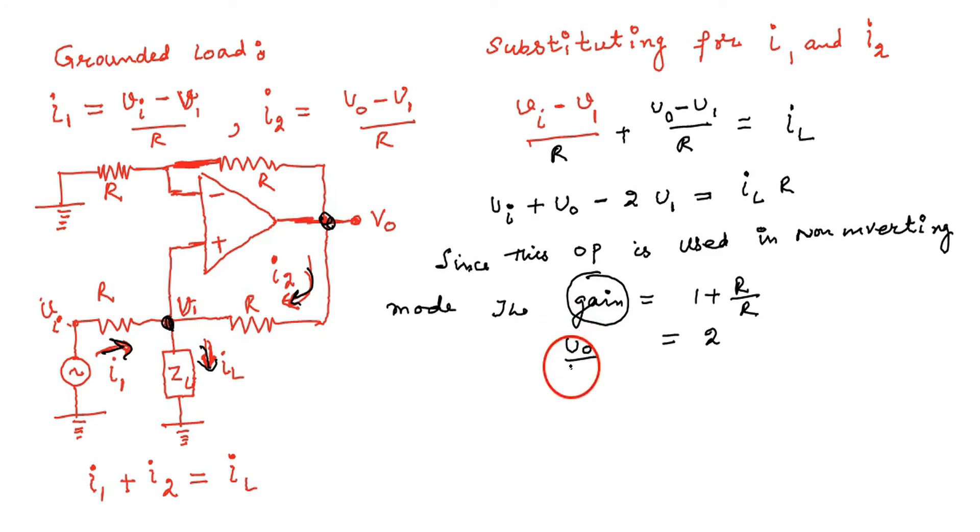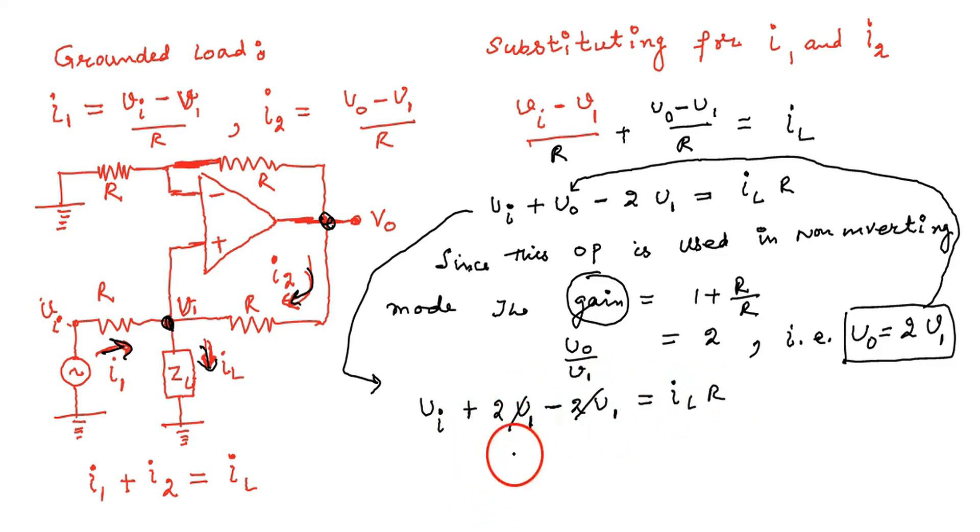And you know what is gain? V not over V1, not VI here. The gain is V not over V1. Remember it is V not over V1, not VI. So substituting here, the equation modifies. And just simplification, we'll get VI equals IL into R, or IL equals VI upon R.